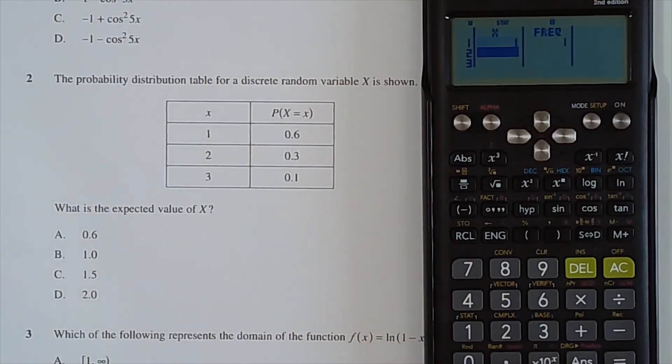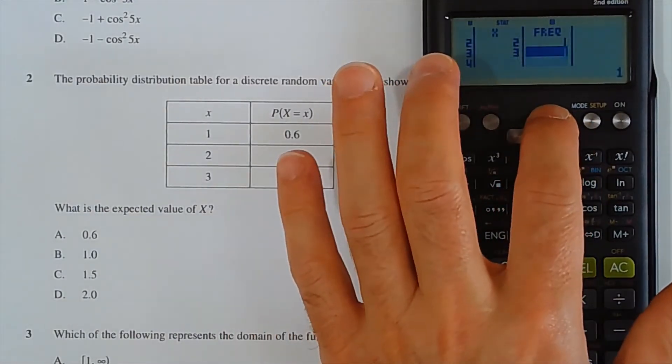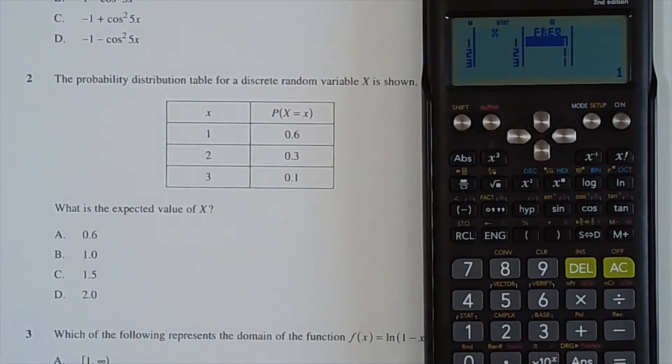I'll type in the first column: 1, 2, 3, so they're the scores, and then the probability that those scores will occur. So 0.6, 0.3, and 0.1.